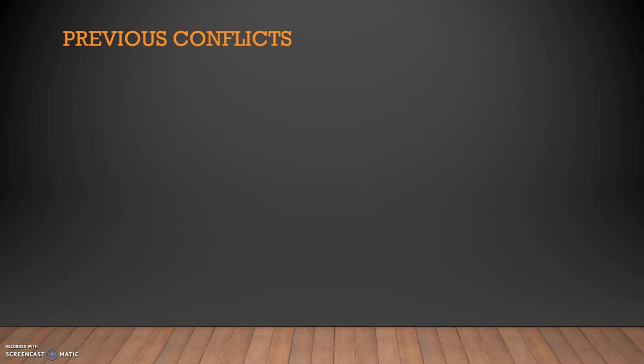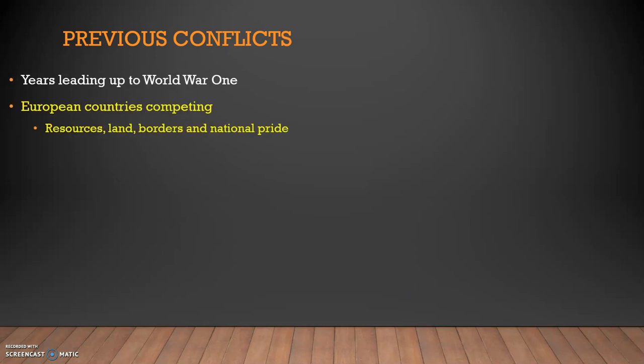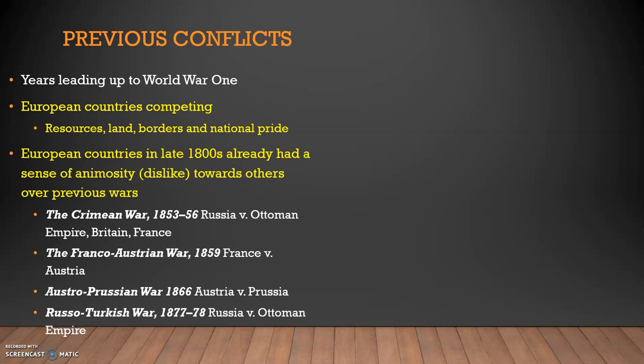I want to talk a little bit about some previous conflicts that took place before World War I. You don't need to know the exact details of a lot of them, but they're important to understand. In the years leading up to World War I, European countries like Britain, France, and Austria-Hungary were all fighting over resources, lands, and borders. They also wanted to have the biggest national prestige. By the late 1800s, European countries already didn't like each other because they'd been fighting wars for the past couple of centuries.